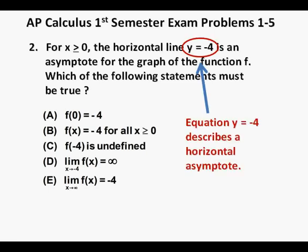This problem is really a concept understanding problem and that concept is the definition of a horizontal asymptote. The language does read horizontal asymptote in a slightly roundabout way and the equation y equals negative 4 is that of a horizontal asymptote.